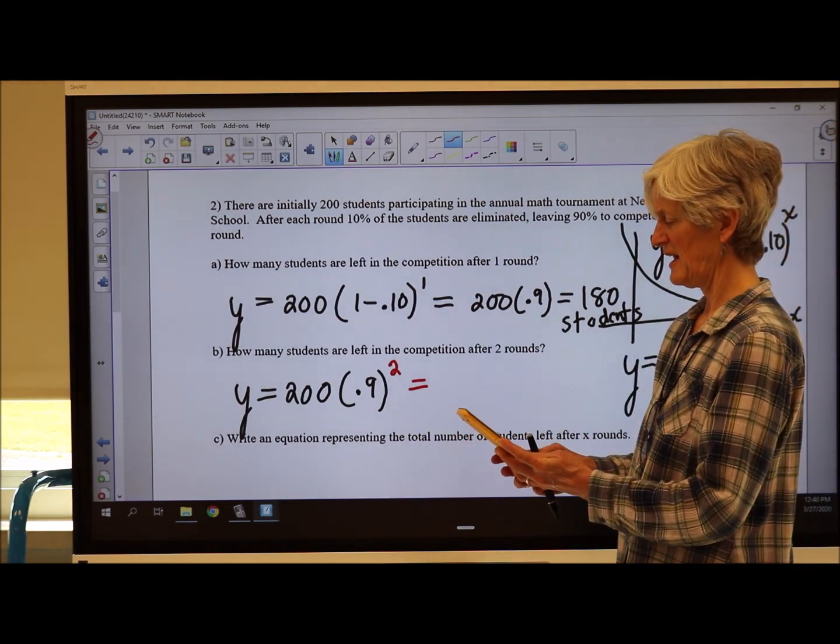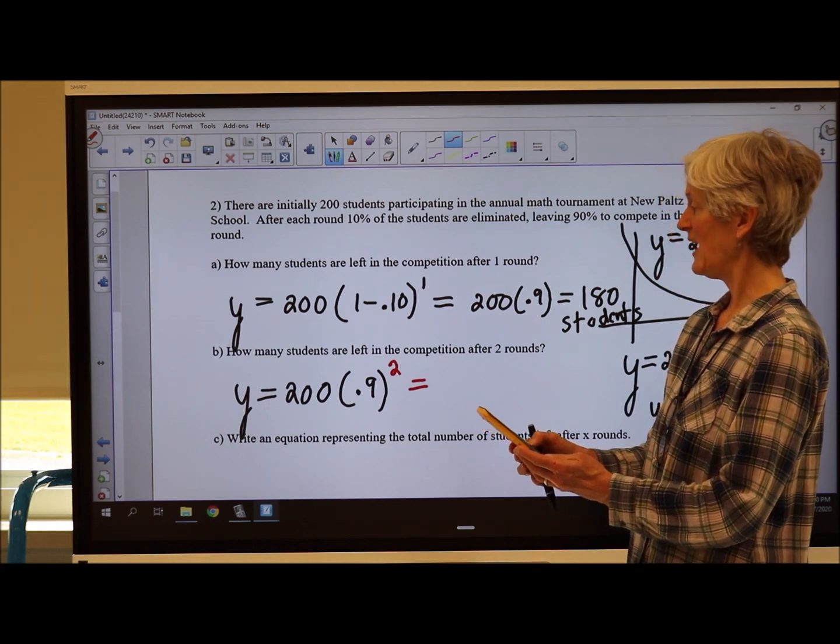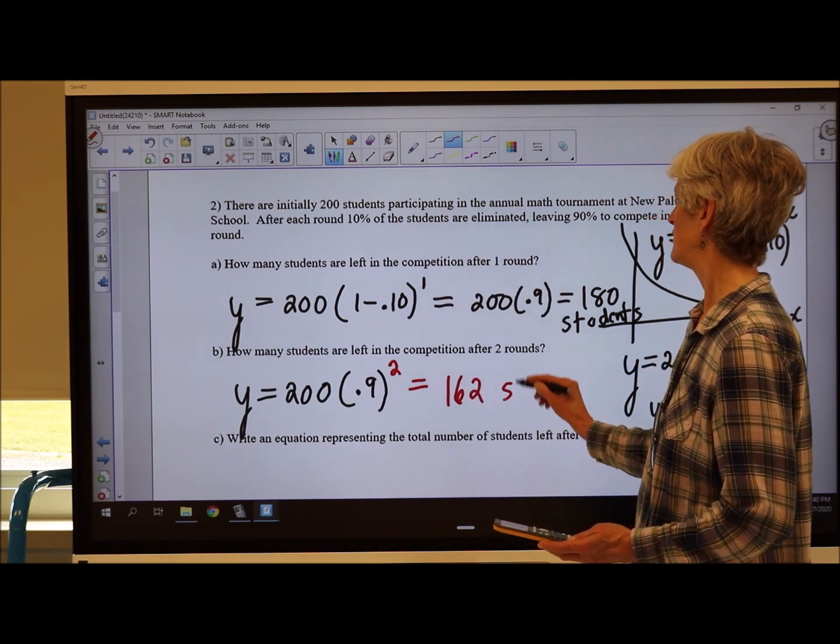Let's review how to put this in your calculator. 200 times 0.9 and the little caret 2 is going to be 162 students.